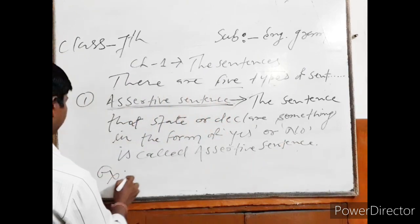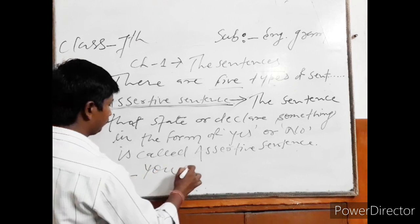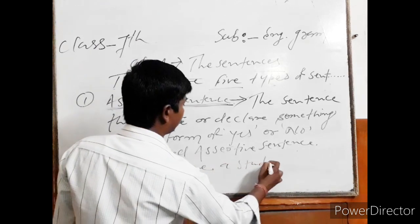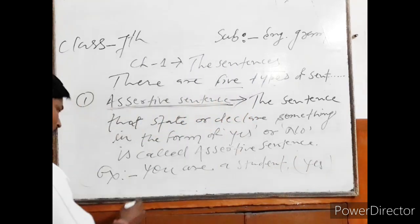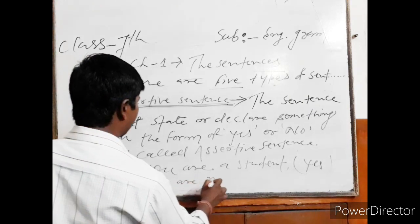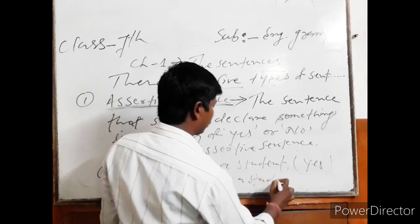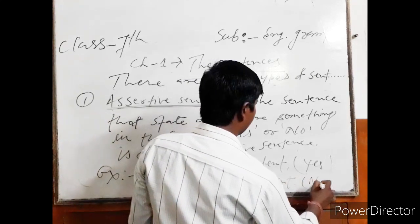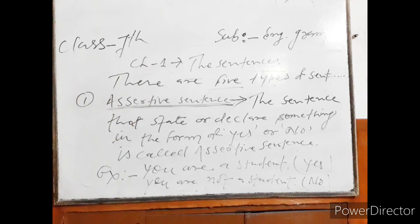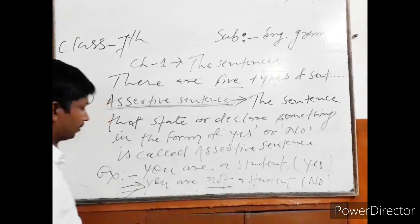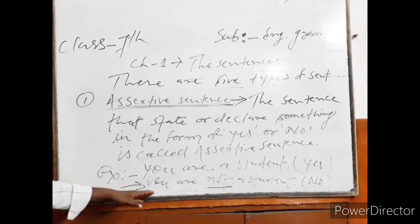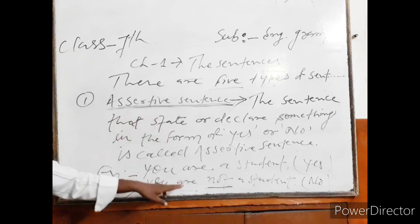An example: 'You are a student' — yes form. And 'You are not a student' — no form. In the form of yes, the sentence is assertive or declarative. In the form of negative, the sentence is a negative assertive or declarative sentence.